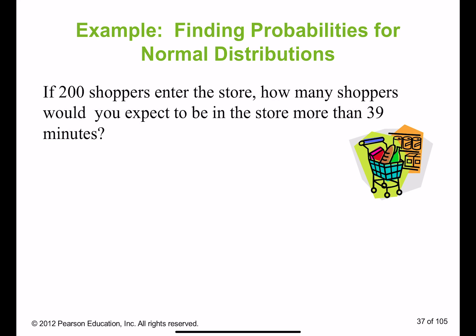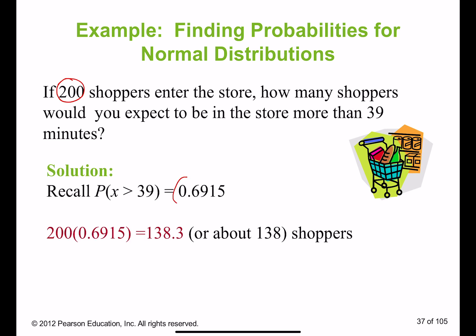For 200 shoppers: 0.6915 × 200 = 138.3, so approximately 138 people. We can say there is a 69 percent chance that 138 shoppers will stay in the store for more than 39 minutes.